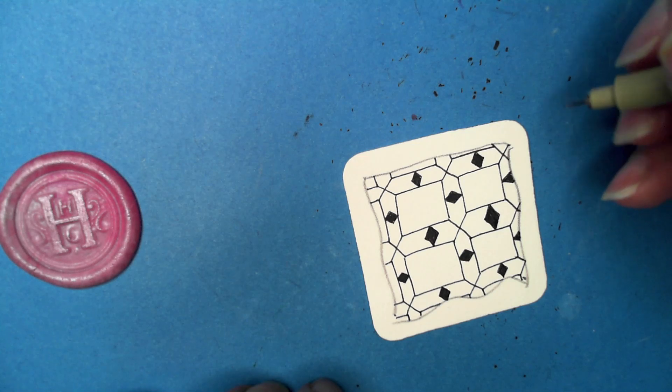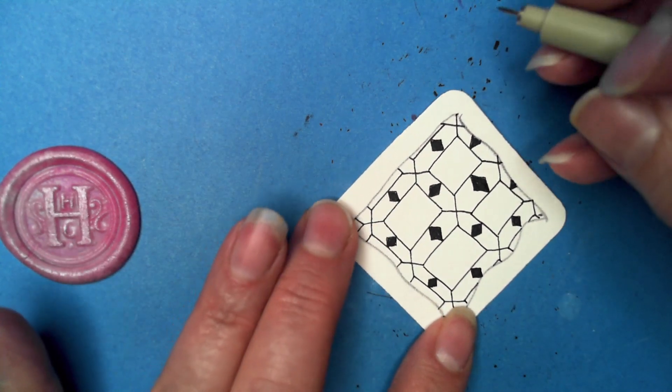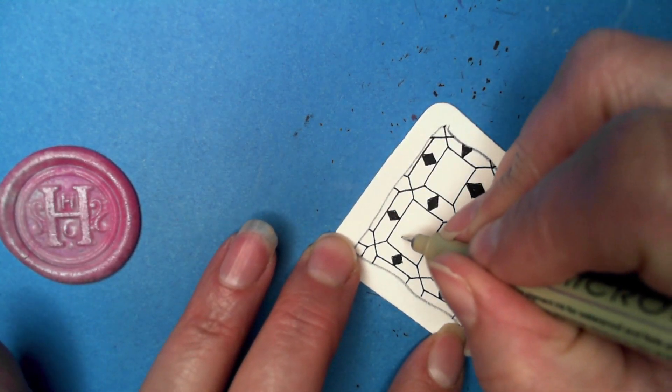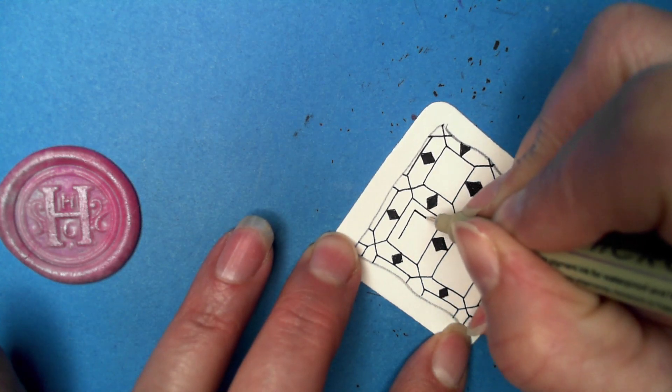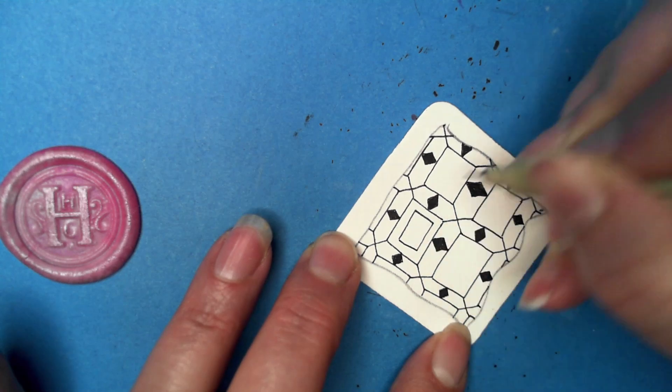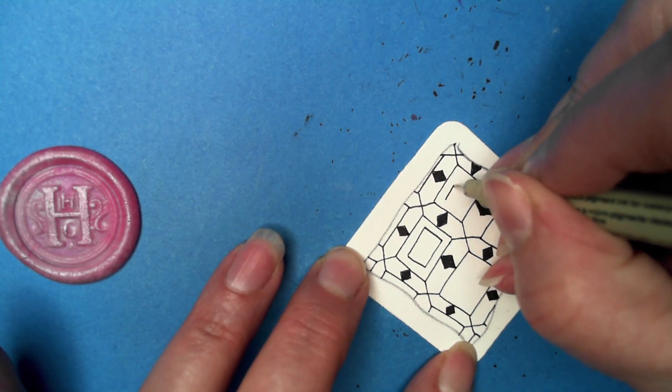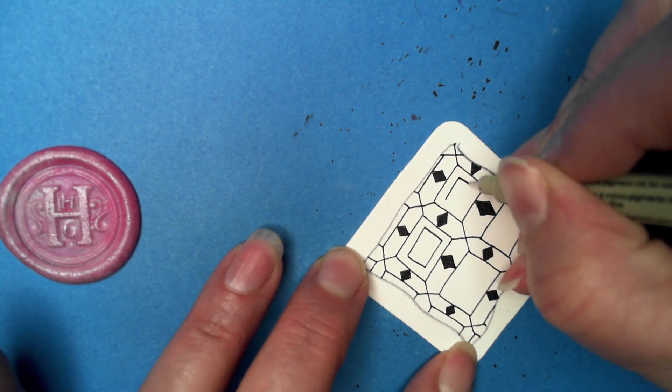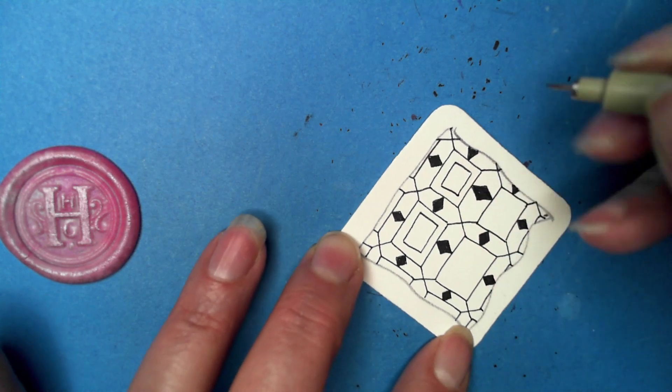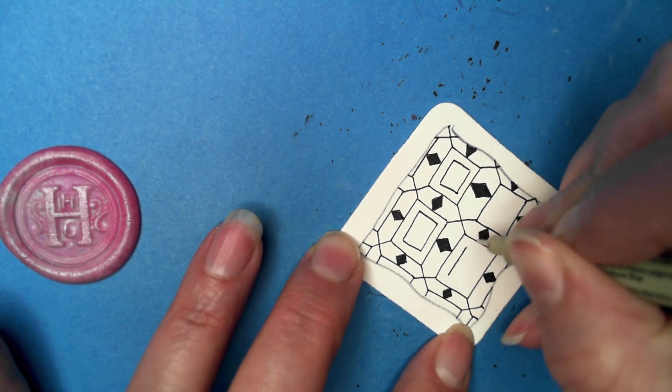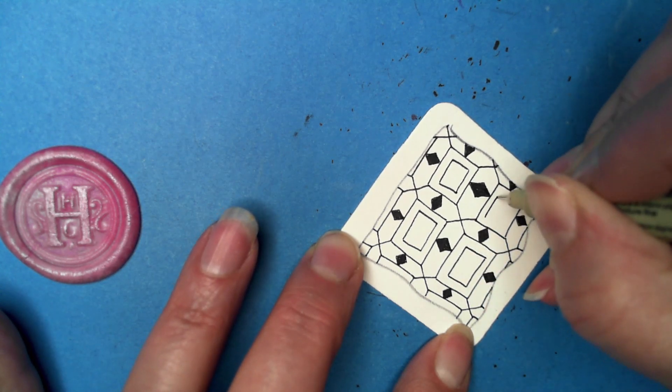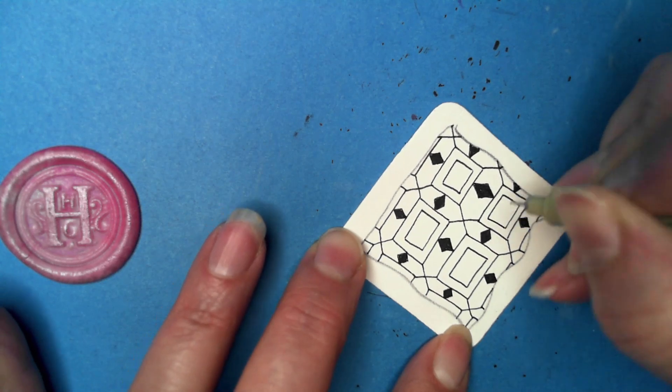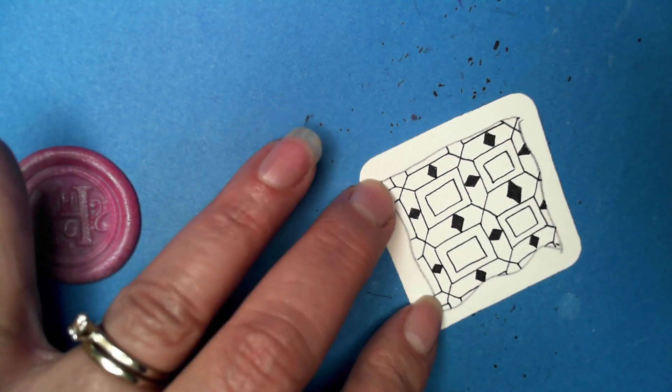Those are all filled in. Next step is we're going to draw a smaller box inside, or as we like to call it, aura-ing. You decide the distance you want from the other lines and just go with it. Try to keep it consistent—or attempt. I attempt to not use the word 'try'.